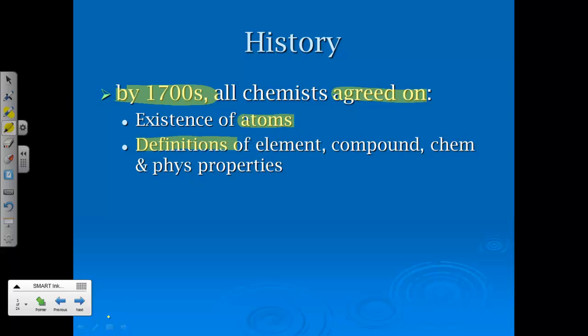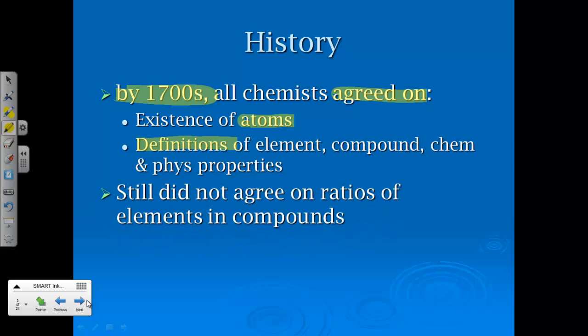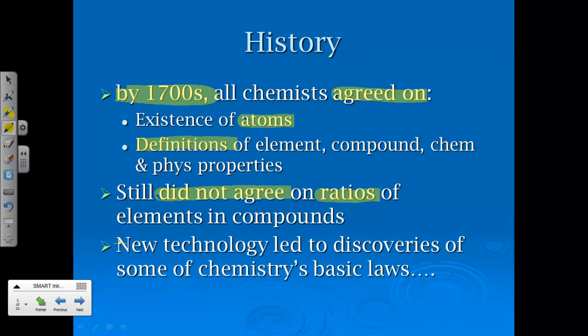We've talked about these terms before where physical property is something that can be observed without changing the identity of a substance. Chemical, you do have to change the identity of a substance. But one thing they did not agree on was the ratios of elements and compounds. They couldn't agree on the ratios of how they combined. And luckily for us, some new technology led to the discovery of some of chemistry's basic laws. And remember, a law is simply an observation of a pattern in nature.